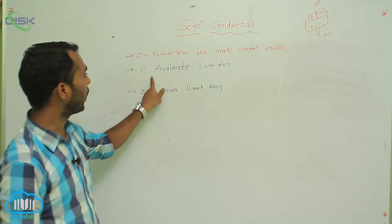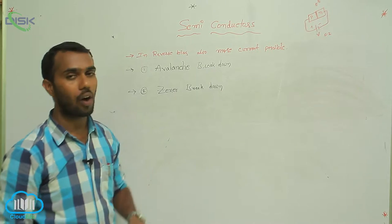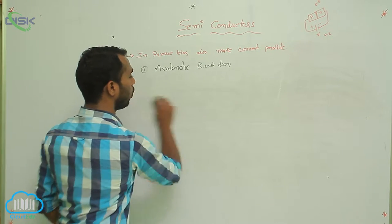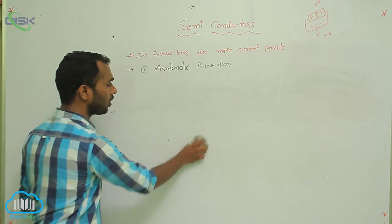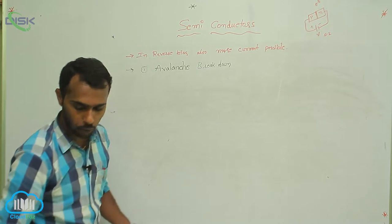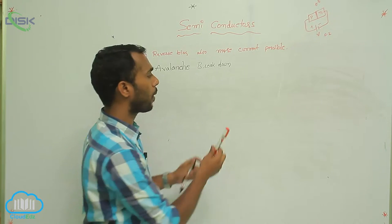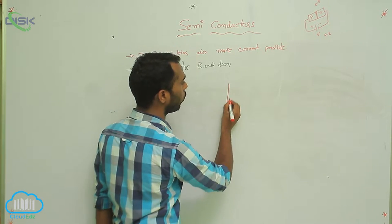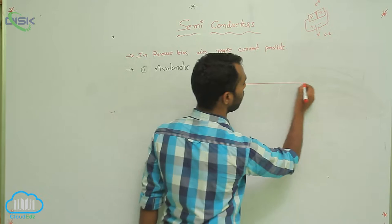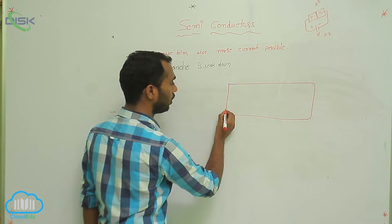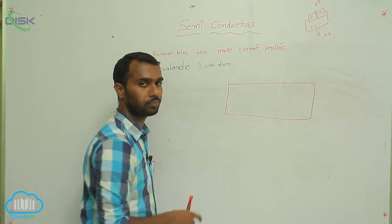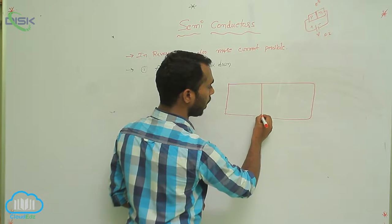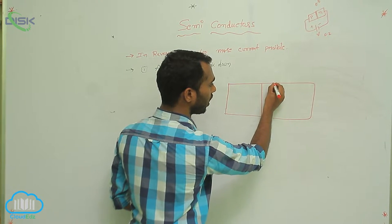Now I am going to explain avalanche breakdown. To understand avalanche breakdown, I am going to draw the pattern of a P-N junction diode. Take a P-N junction diode. This is the depletion region.